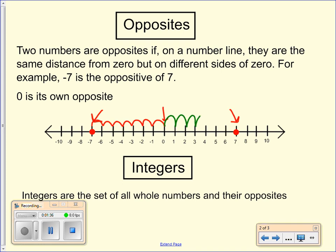One, two, three, four, five, six, seven. Therefore, negative seven is the opposite of positive seven.